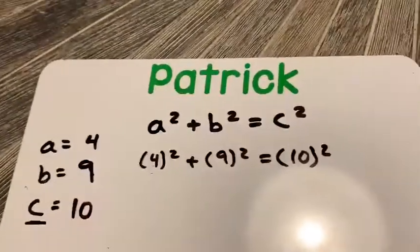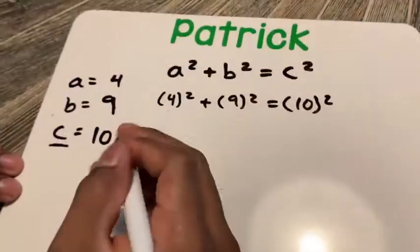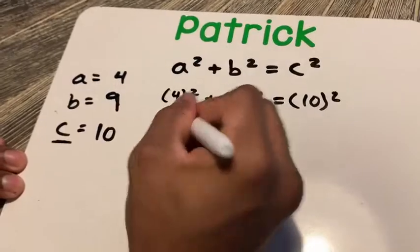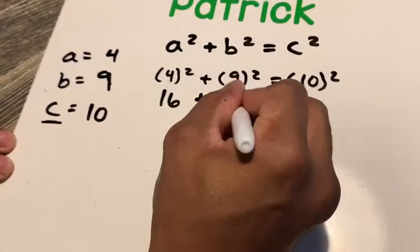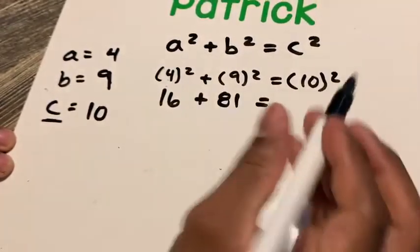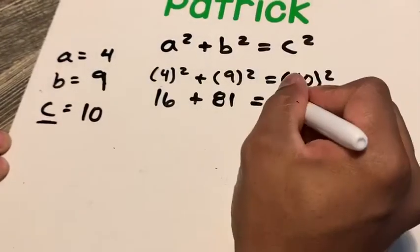Now with these, you can use your calculator, but you should know that four squared, four times four is 16. You should know that nine squared, nine times nine is 81. And you should know that 10 squared, 10 times 10 is 100.